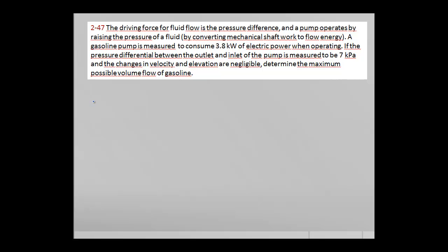Finally, we're going to solve another problem. This time we have a pump, and we know that the driving force of fluid flow is the pressure difference. A gradient is needed to create a flow, which creates this pressure in the fluid flow. We have a pump that uses 3.8 kilowatts of electricity when operating, and the pressure increase in the pump is 70 kilopascals. We are asked to find the maximum volume flow rate of gasoline for this data.